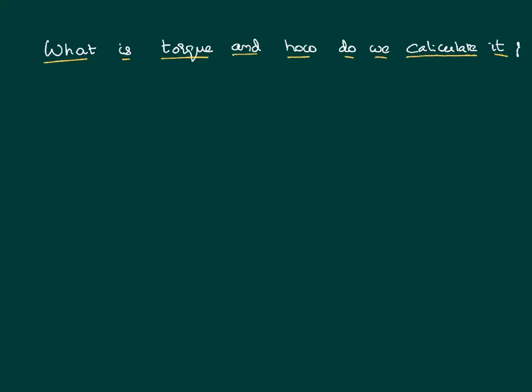Torque is nothing but turning effect. If you want to move any body in translatory motion we need to apply force; similarly, if you want to rotate any body we need to apply a torque. Let us consider a metal rod fixed at one end, with length equal to l, and we want to turn it.